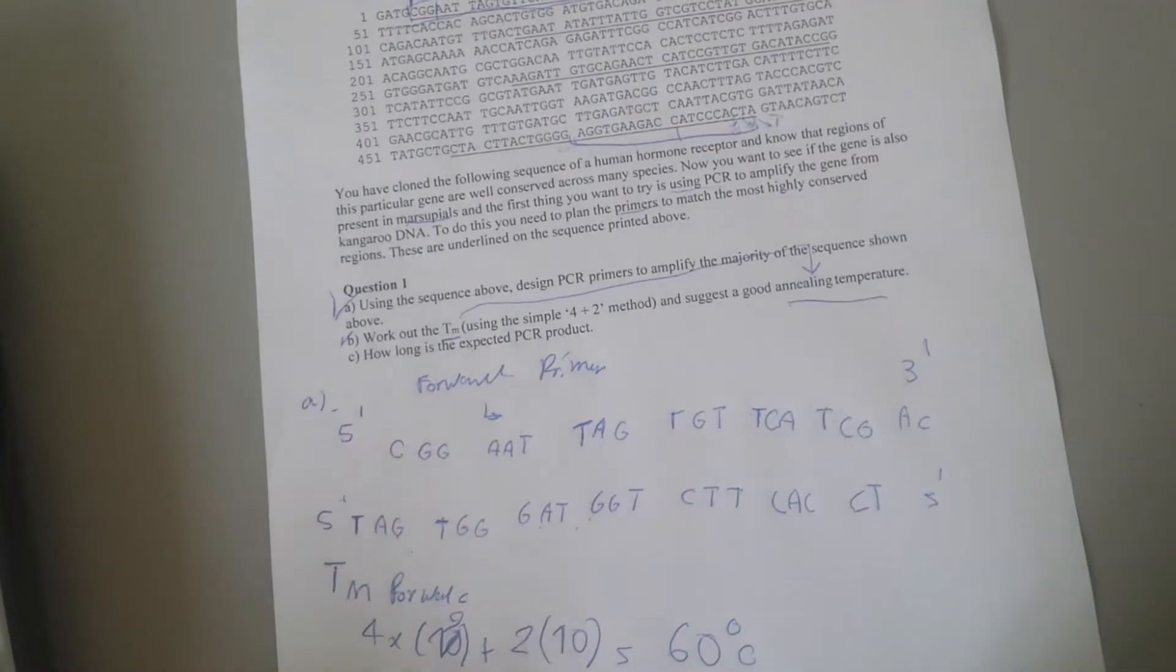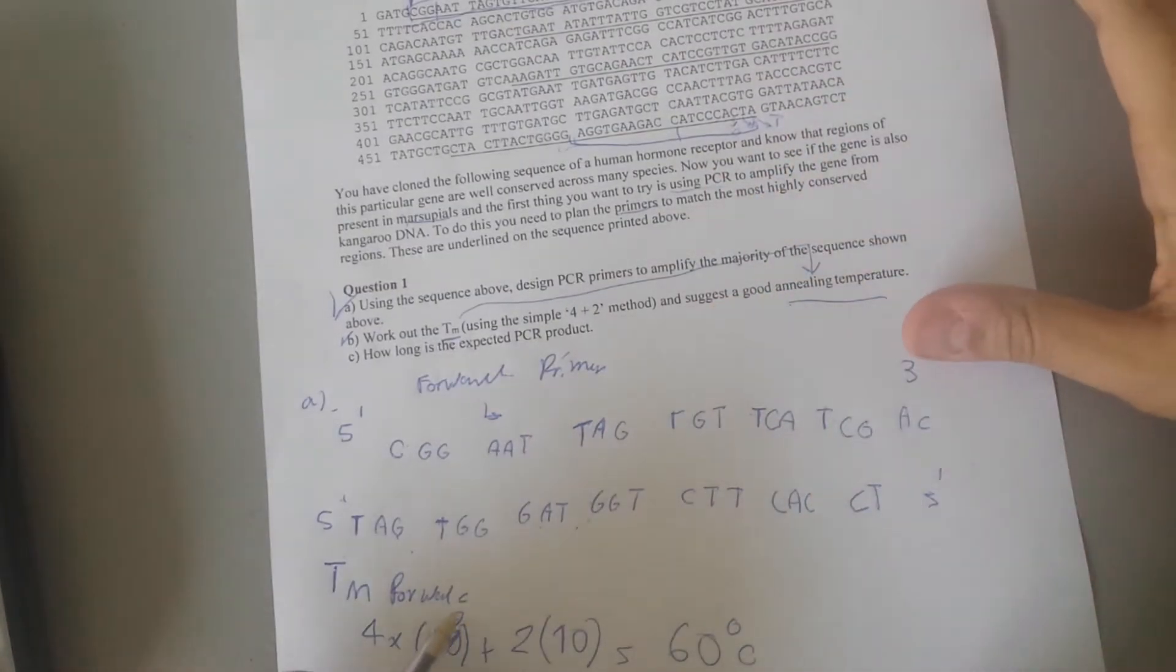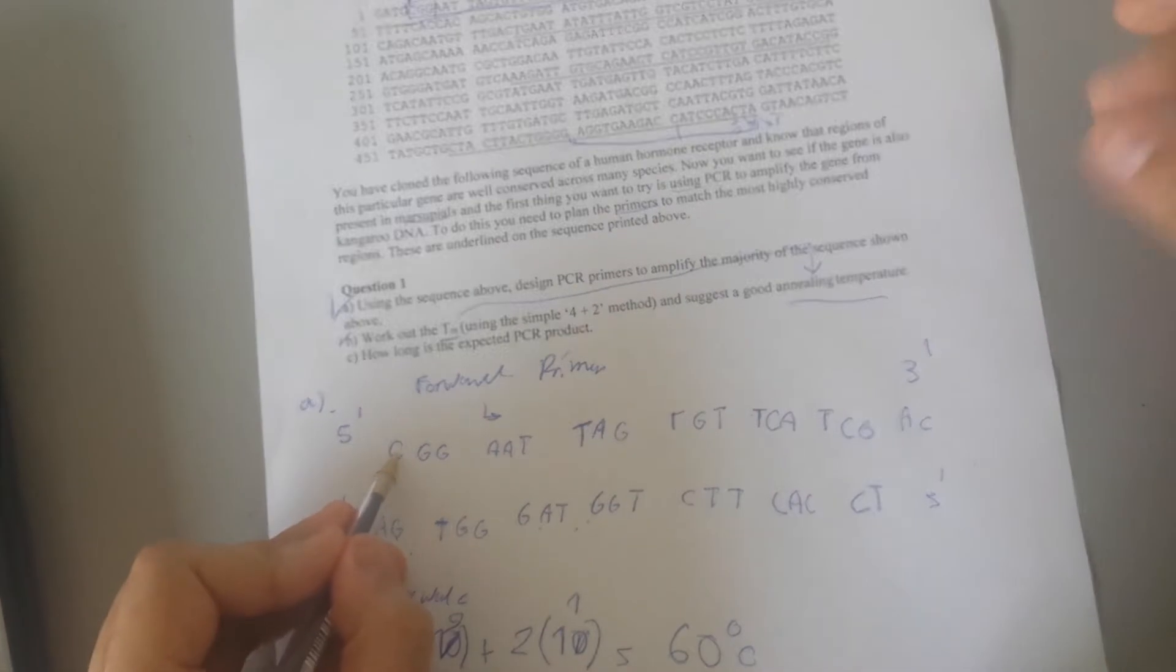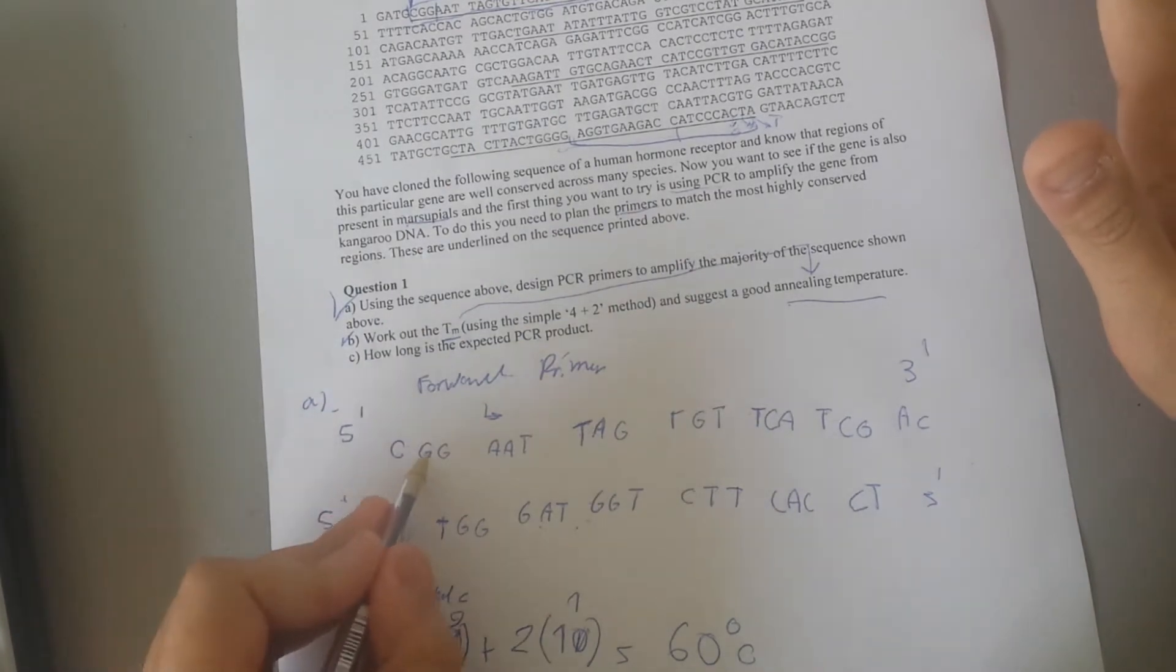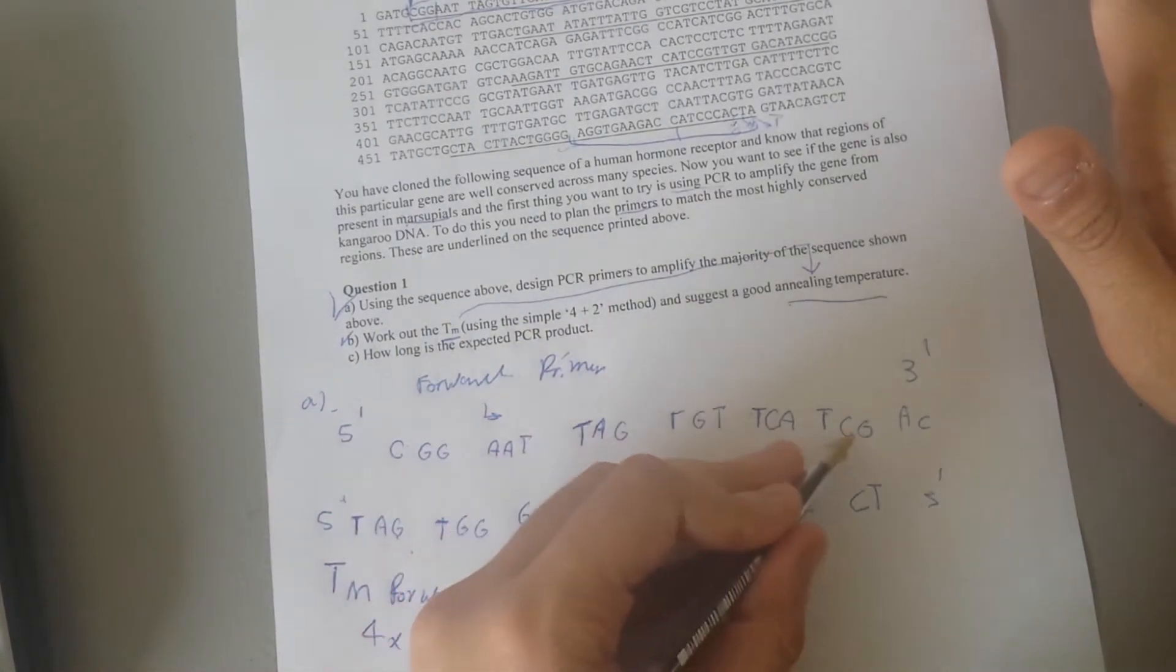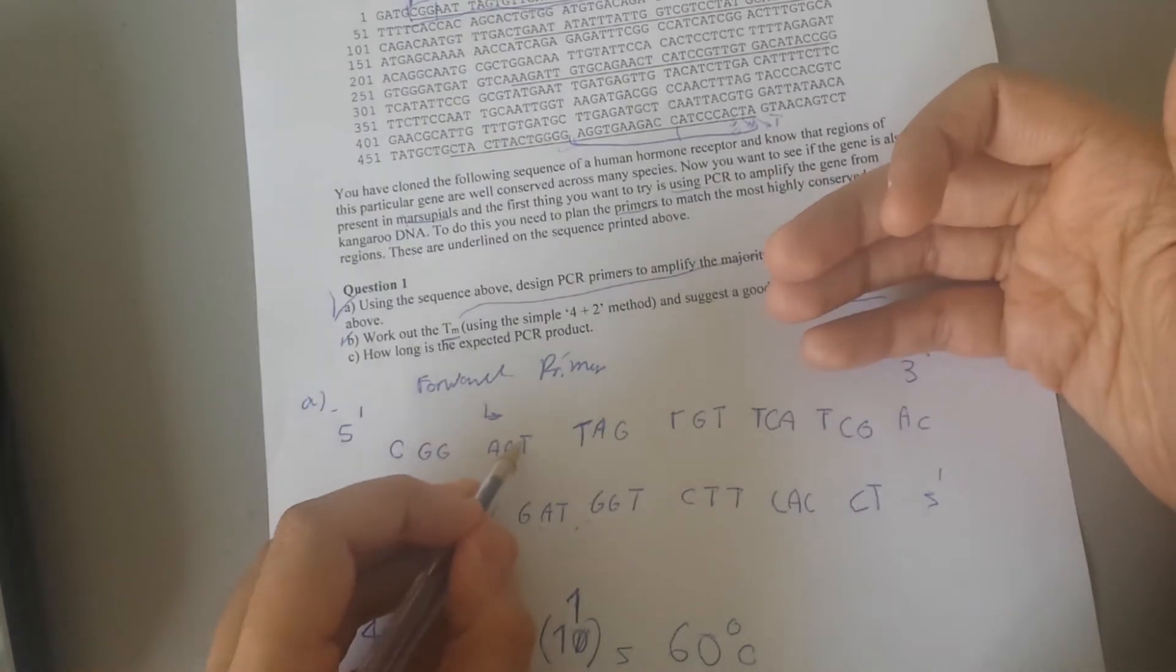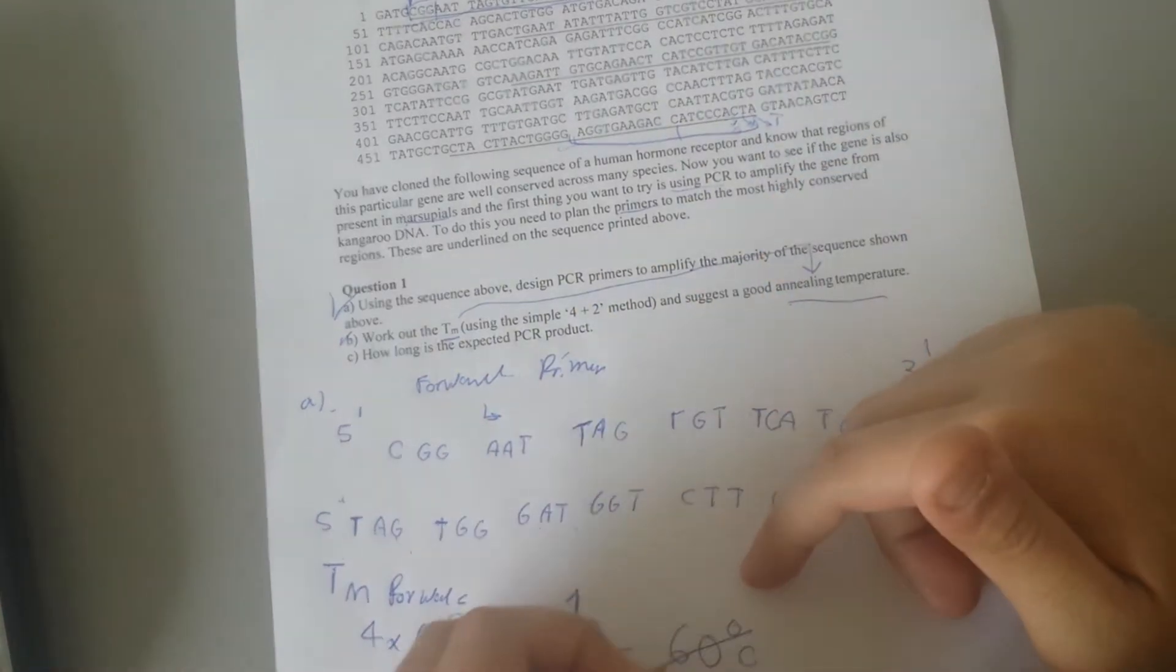My apologies, I made a mistake here, this meant to be nine. For the forward primer it's nine not ten. So it's one through nine CG, and the AT would be eleven. So then that would give us fifty-eight degrees Celsius.